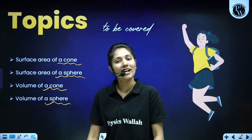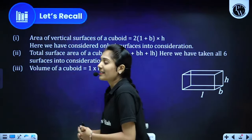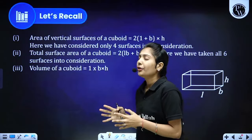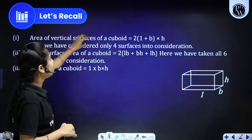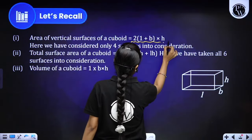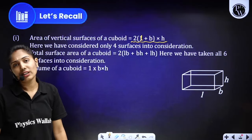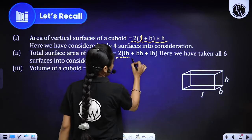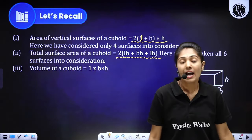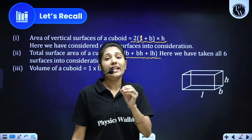Let's recall cuboid, cube, and cylinder. For a cuboid, the area of vertical surfaces — that is, curved surface area — is 2 times (length + breadth) × height. Total surface area is 2(LB + BH + LH). This chapter is completely based on formulas. I suggest you make a chart with all formulas written shape-wise in tabular format, paste it at your study place, and revise daily so the formulas get memorized.